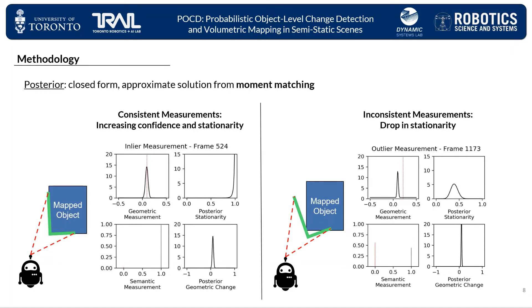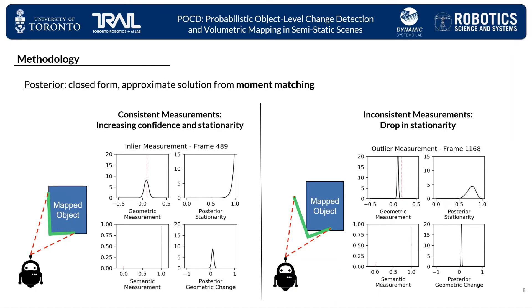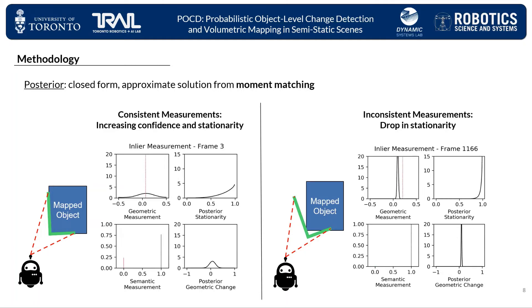Below, we show the evolution of the state model. On the left-hand side, we can see that both stationarity and state confidence increase under consistent measurements, whereas on the right-hand side, the stationarity score drops significantly under inconsistent measurements.